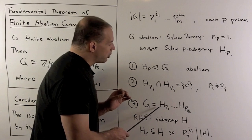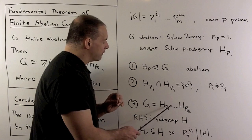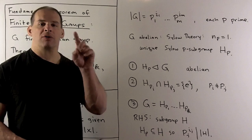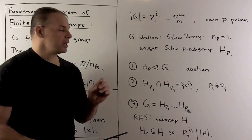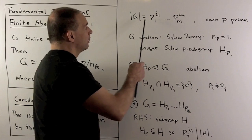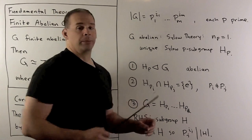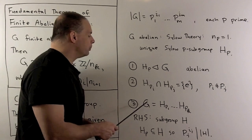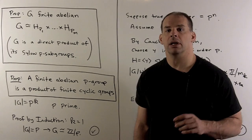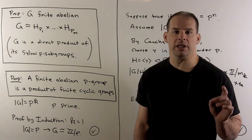If we consider this product on the right-hand side — I'll call that the subgroup H — we note each H sub p is contained in H, so each power of a prime is going to divide the order of H. Since each Sylow subgroup is contained in this subgroup, the order of H equals the order of G, meaning we have all of G. So our three statements hold and we can form an internal direct product. To summarize: G finite abelian means we can write G as a direct product of its Sylow p-subgroups.